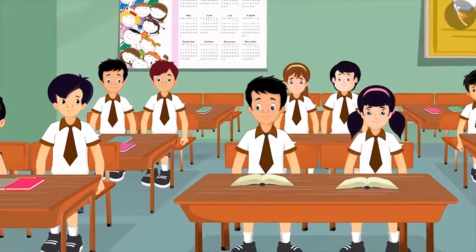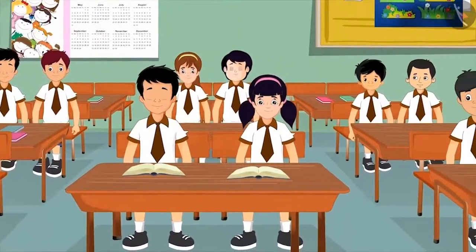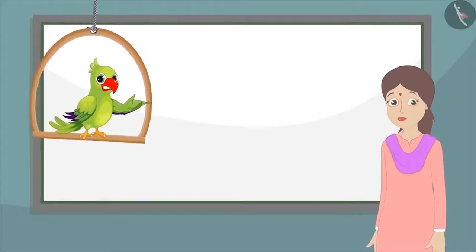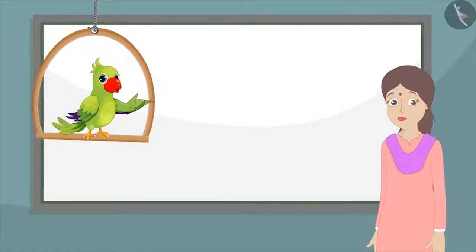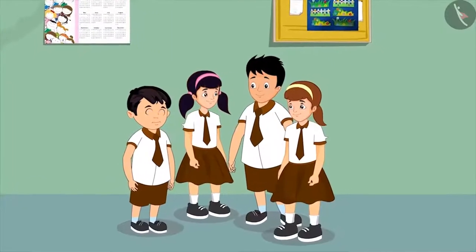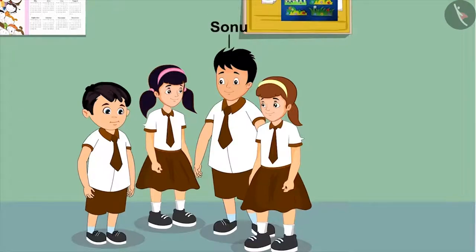Today Chotu's class is going for a picnic. Chotu's teacher asks all the children to stand in groups of four, and then asks the four children to stand in a line in small to large order based on their height. Chotu and his three friends — Aarti, Neha, and Sonu — begin to stand in a line.